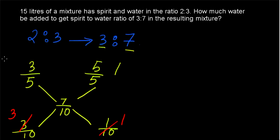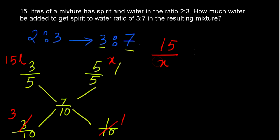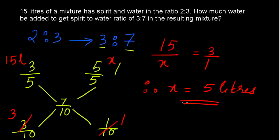The mixture quantity is 15 liters. Let the amount of water to be added be x liters. We get 15 by x equal to 3 by 1, therefore x equals 5 liters. So 5 liters of water is to be added to convert the ratio from 2 is to 3 to 3 is to 7.